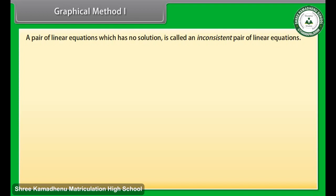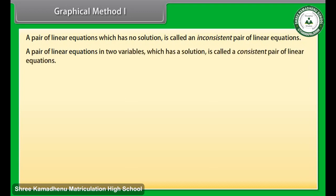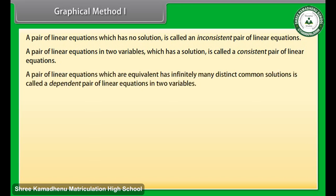A pair of linear equations which has no solution is called an inconsistent pair of linear equations. A pair of linear equations in two variables which has a solution is called a consistent pair of linear equations. A pair of linear equations which are equivalent and has infinitely many distinct common solutions is called a dependent pair of linear equations in two variables. A dependent pair of linear equations is always consistent.